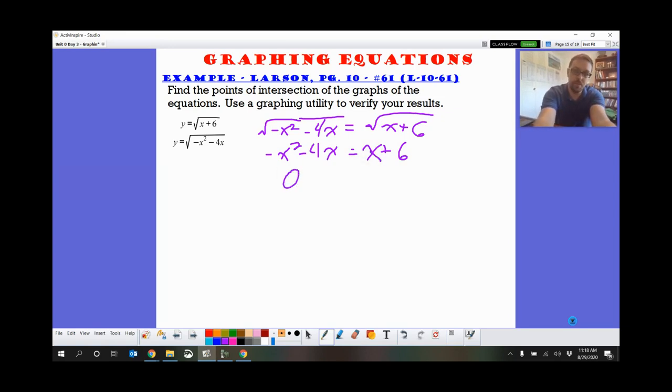Now we've got a quadratic. So let's get it equal to 0. So 0 equals x squared plus 5x plus 6. Do a quick factor. We want to multiply to be 6 and add to be 5. So 2 and 3. So x equals negative 2 and x equals negative 3.